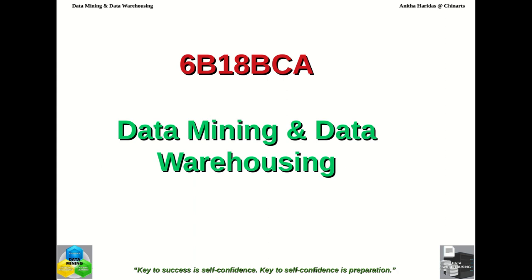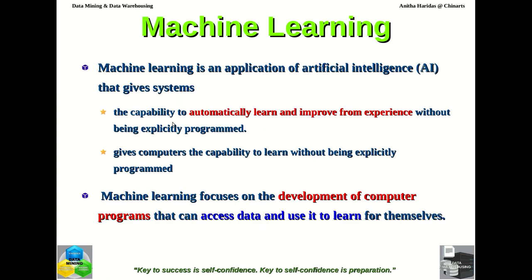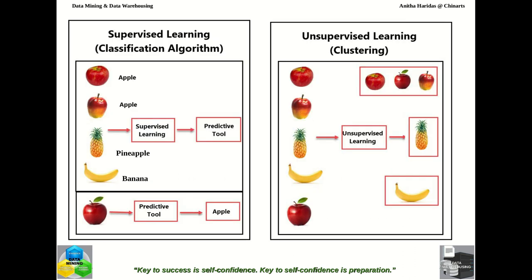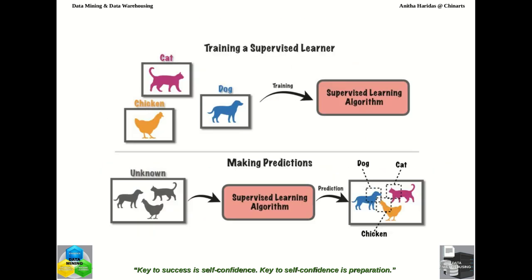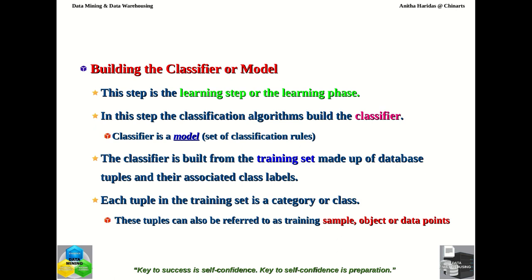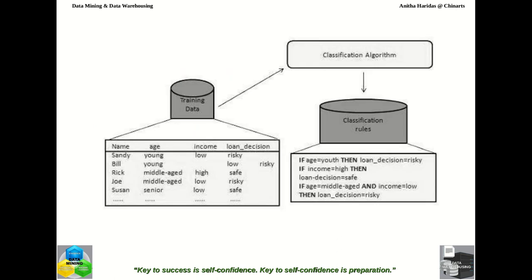Welcome to the next session of the Data Mining and Data Warehousing course. We are currently talking about decision trees used in the classification scheme. We have discussed what is machine learning, what supervised and unsupervised learning means, and classification as one of the supervised learning approaches. We discussed what classification is and the two important steps of the classification process in our previous video.